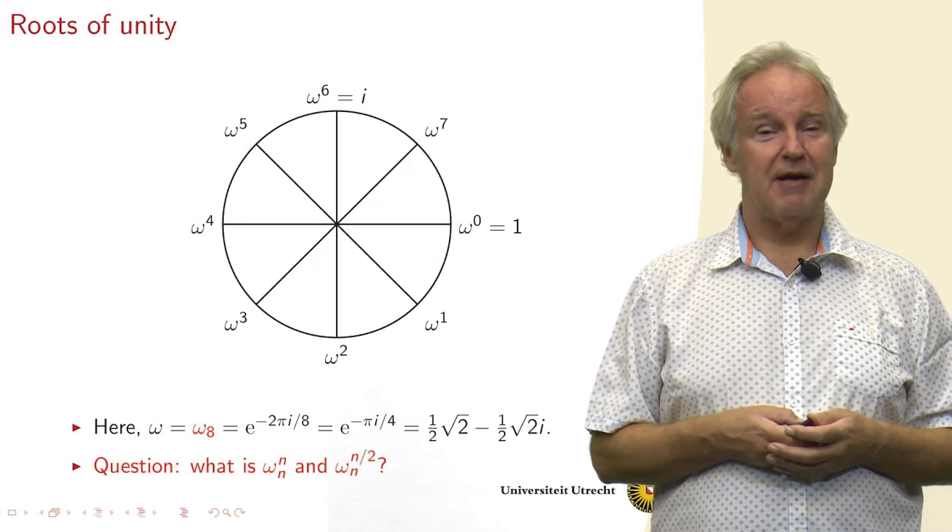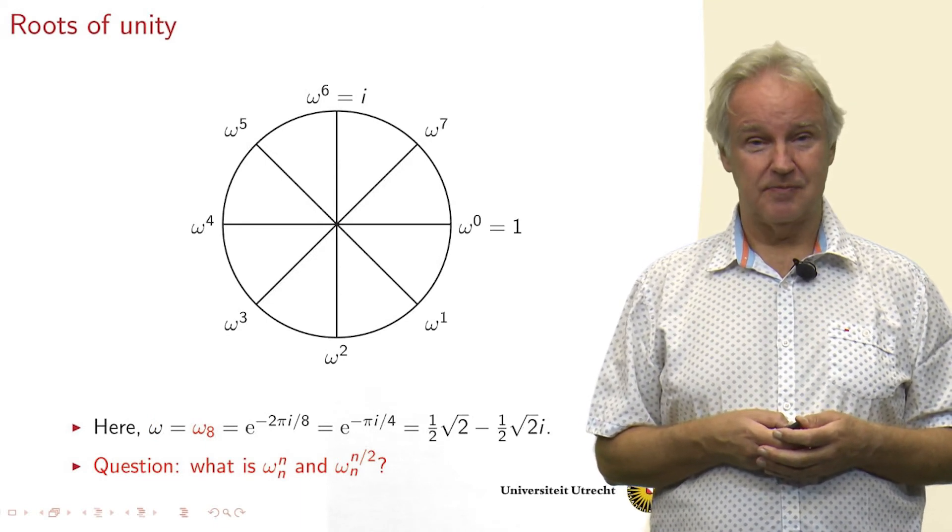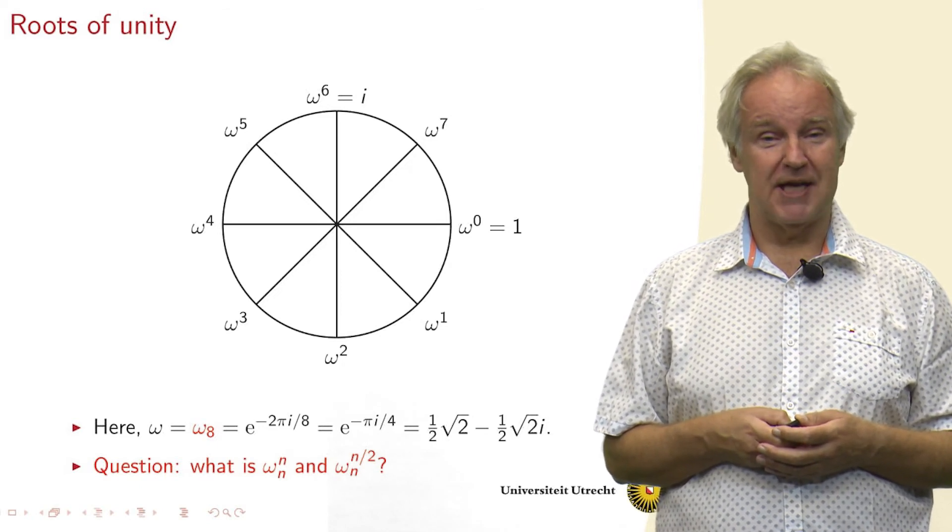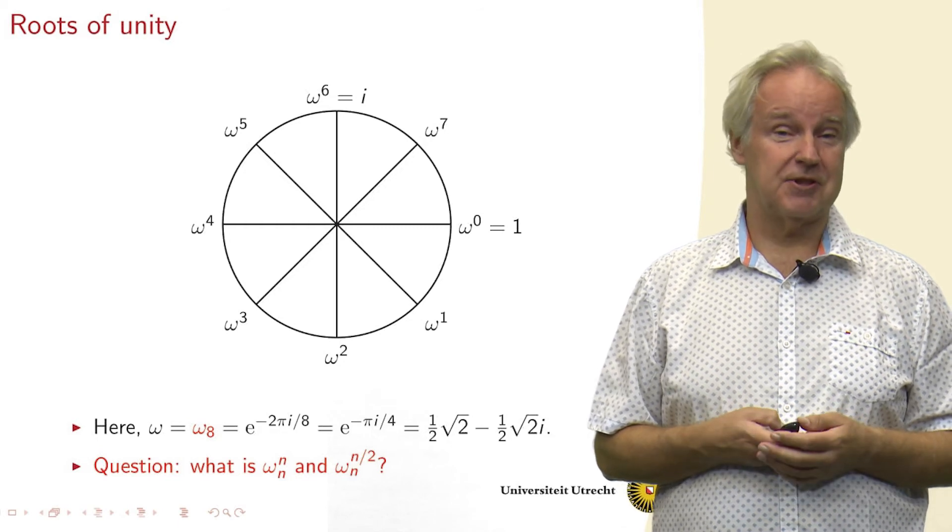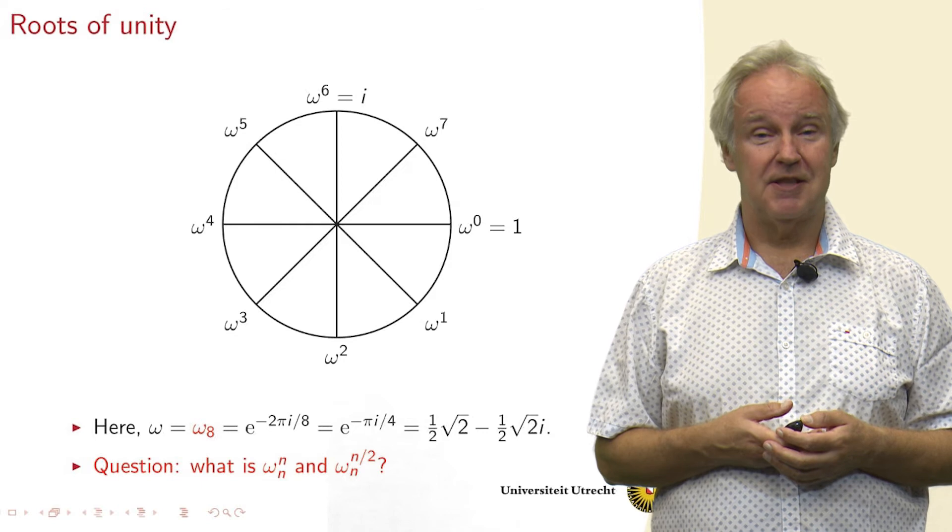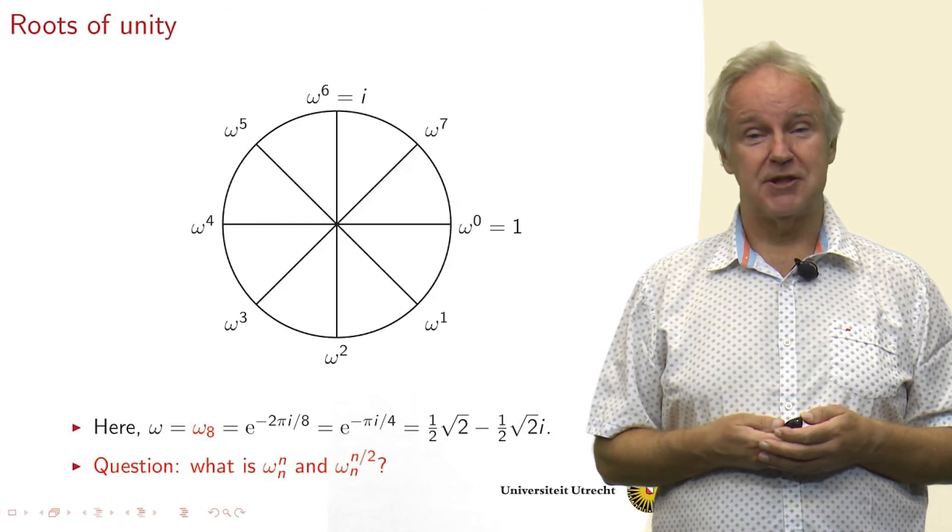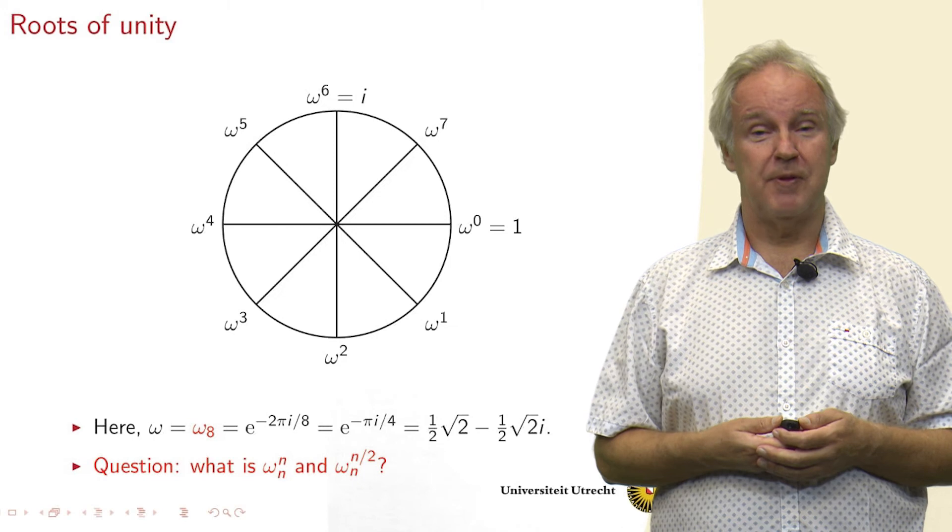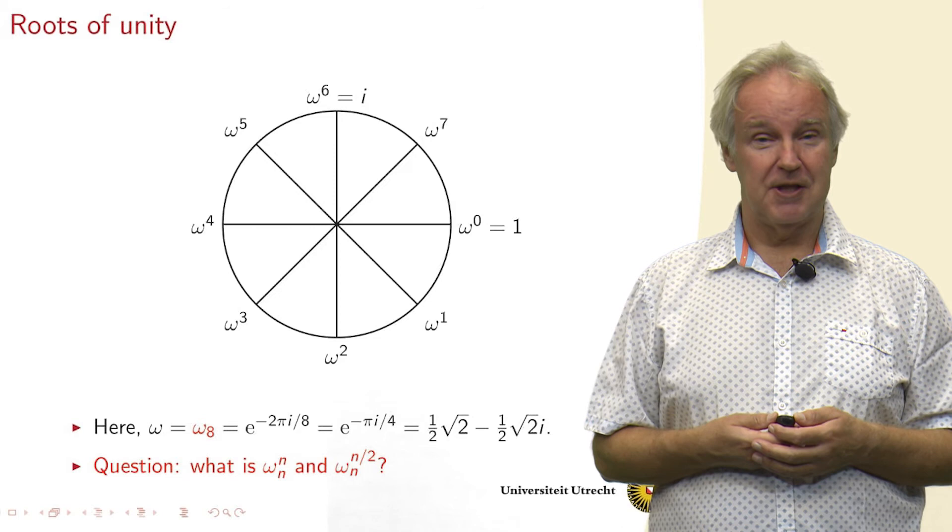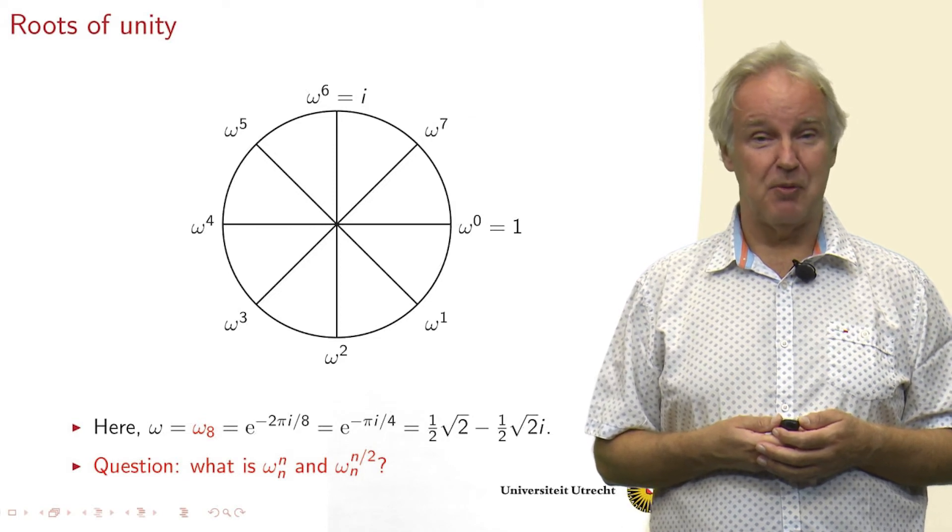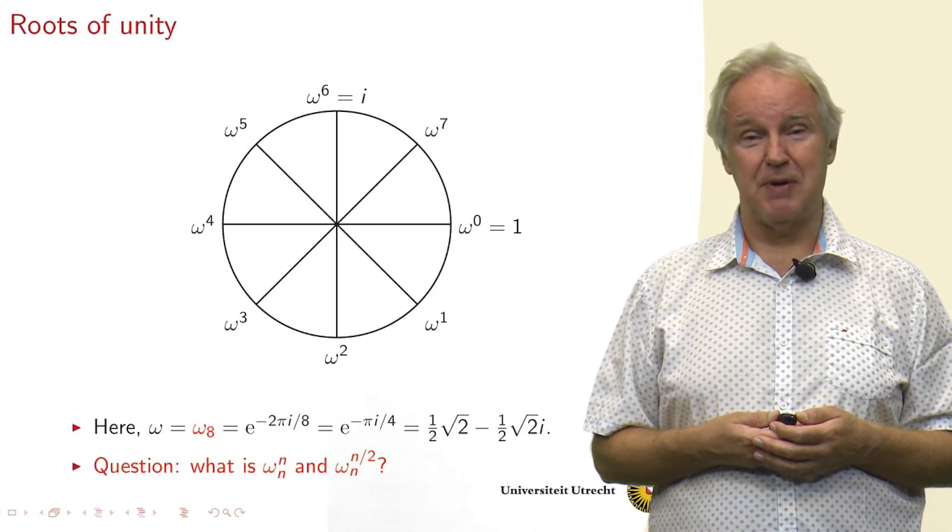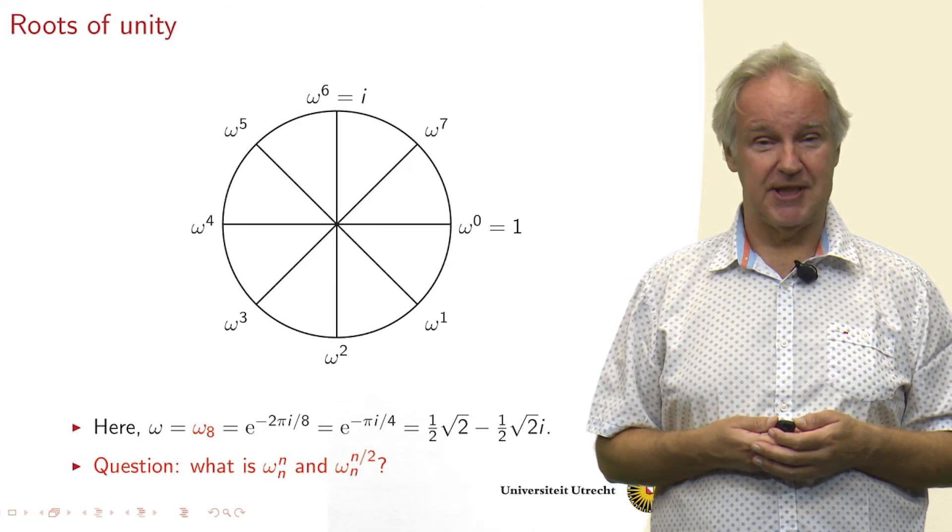So if we have omega 8, then we can draw a picture of all the powers of omega 8 that are relevant. Omega 8 equals e to the power minus 2 pi i divided by 8, which is half square root 2 minus half square root 2 times i. And you can see it on this circle. You see the powers of omega going from omega to the power 0, which is 1, to omega to the power 7. So clockwise in this case.